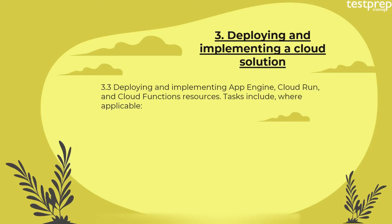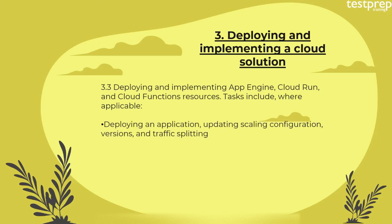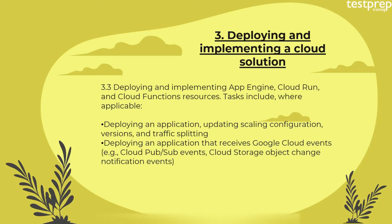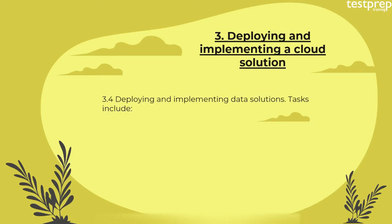Number three: deploying and implementing App Engine, Cloud Run, and Cloud Functions resources — tasks include deploying an application, updating scaling configuration, versions, and traffic splitting; and deploying an application that receives Google Cloud events, for example Cloud Pub/Sub events and Cloud Storage object change notification events.